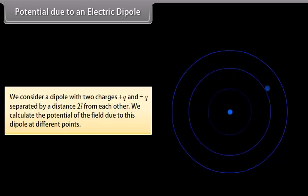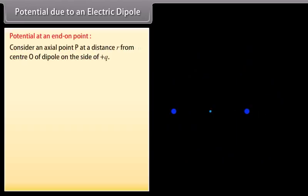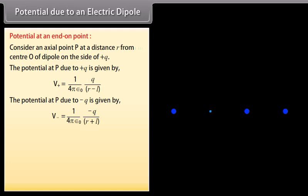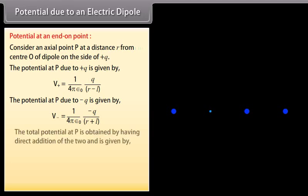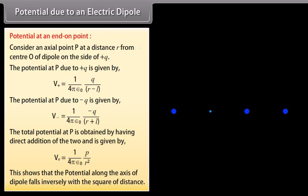Potential due to an electric dipole. Consider a dipole with two charges plus Q and minus Q separated by a distance 2L. For an axial point P at a distance R from the center O of the dipole on the side of plus Q, the potential due to plus Q is V_positive equals 1 over 4π ε₀ multiplied by Q over (R minus L), and due to minus Q is V_negative equals 1 over 4π ε₀ multiplied by minus Q over (R plus L). The total potential at P is V_E equals 1 over 4π ε₀ multiplied by P over R². This shows that the potential along the axis of the dipole falls inversely with the square of distance.